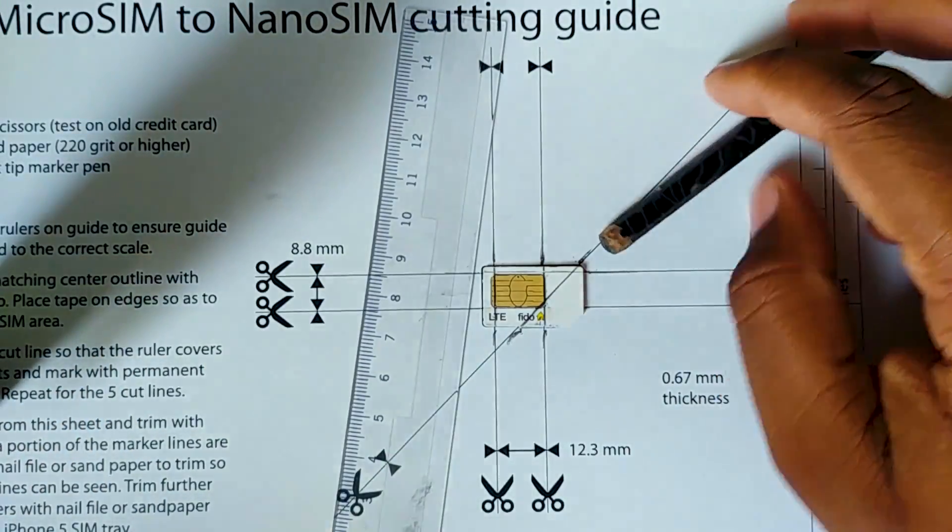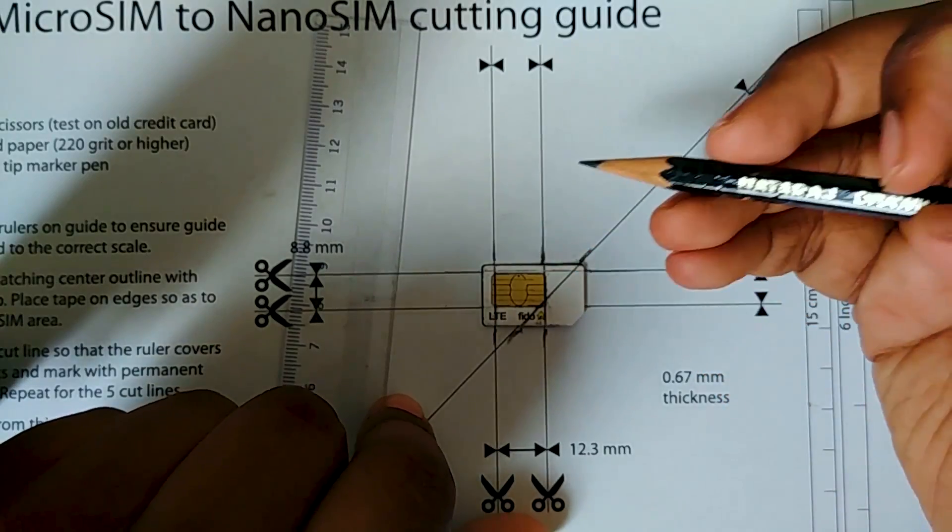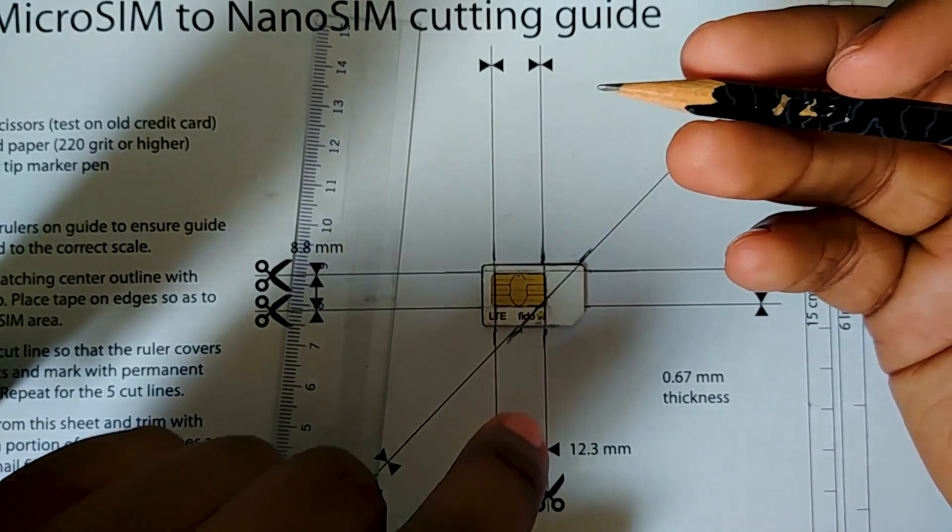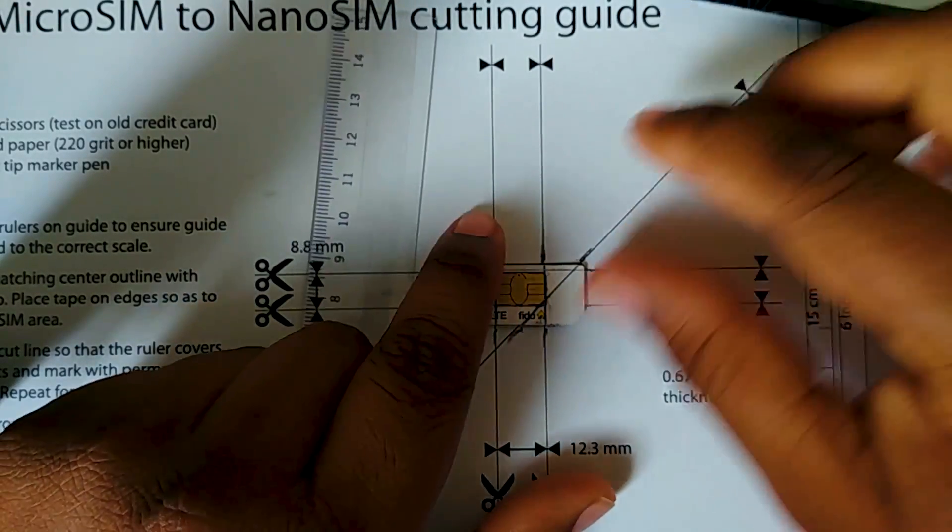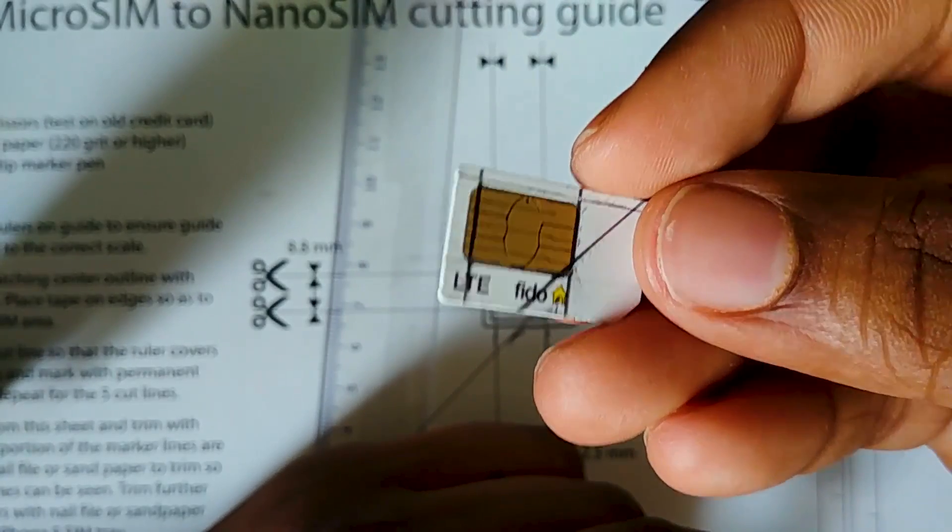Once we have drawn our lines, you'll notice that somewhere like right here it cuts into the SIM, and that's okay. Don't freak out because it's supposed to do that - the nano SIM is much smaller. Now we're gonna remove the tape and you'll see our lines, so that's looking pretty dope.